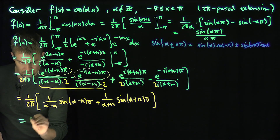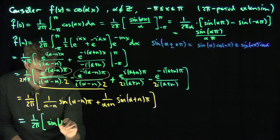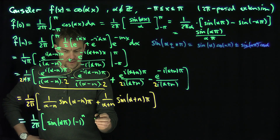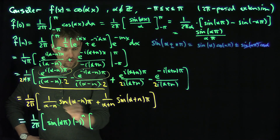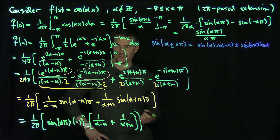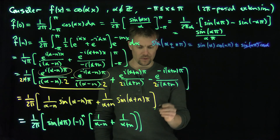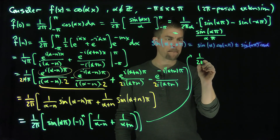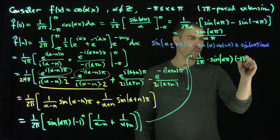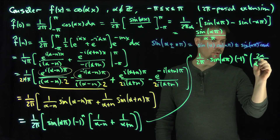Continuing, we have 1 over 2π, and everything has a factor of sin(απ) times (-1)^n. Then I have 1/(α-n) plus 1/(α+n). Adding those fractions: (α+n) + (α-n) = 2α in the numerator, over (α²-n²) in the denominator. So we get 2α over (α²-n²).